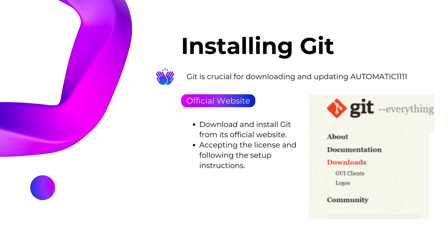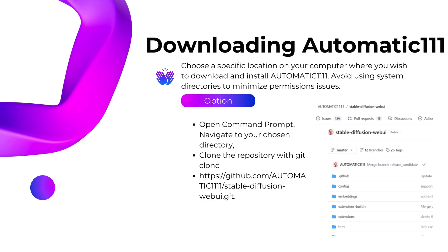Now pick a cozy spot on your PC for the AUTOMATIC1111 files. Avoid system directories to keep things smooth. Once you've found the perfect spot, use the command prompt to navigate there and clone the repository. It's like setting up a little home for your new AI friend.